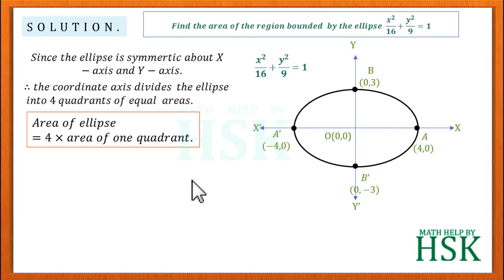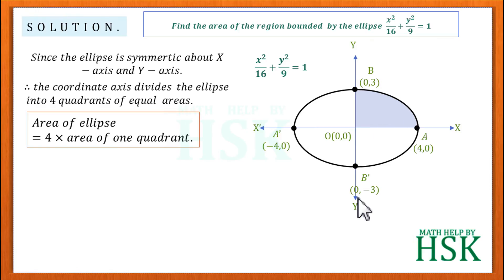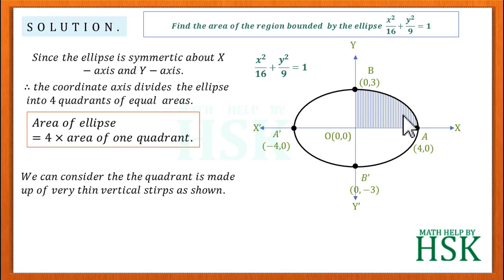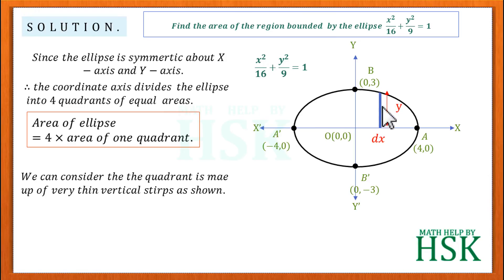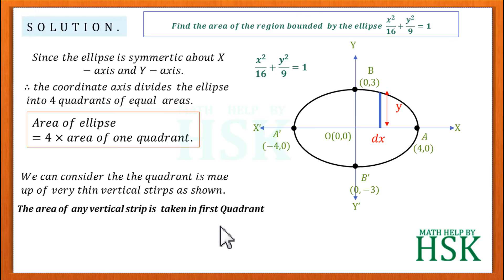We are going to calculate the area of just one quadrant and multiply by four to get the total area of the ellipse. I take the portion of the ellipse lying in the first quadrant and divide this area into vertical strips. If I take one such vertical strip, its width is dx and its length — the distance from the x-axis to the point on the curve — is equal to y.